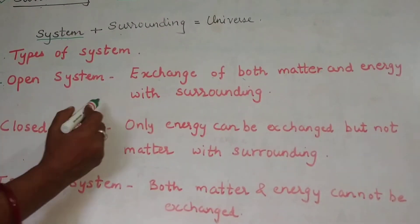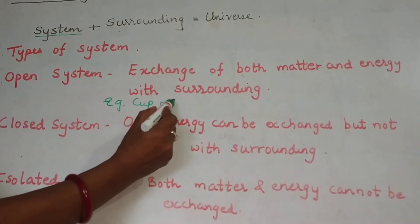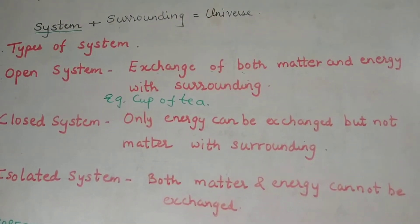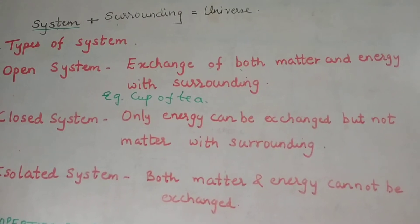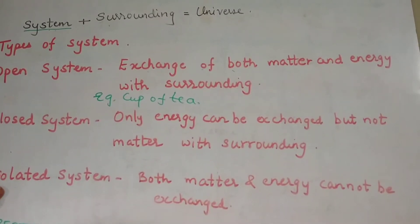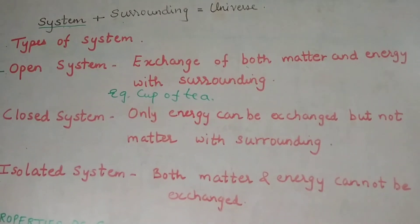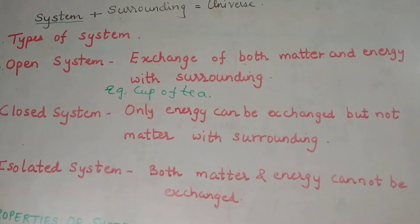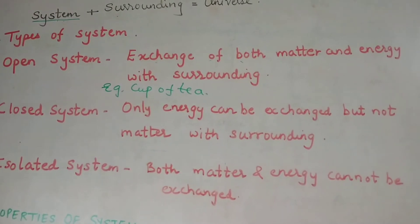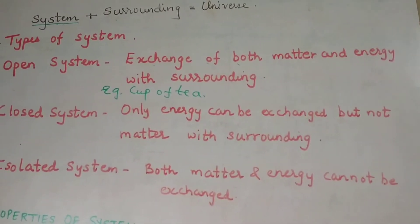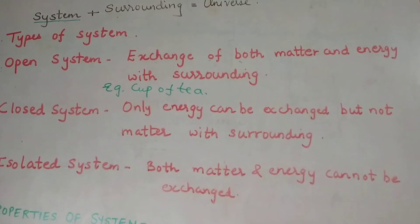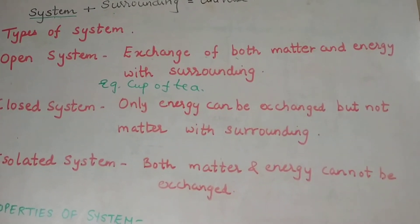For example, take a cup of tea which is kept on the table — this cup is open. There can be exchange of energy because the tea is going to become cool after some time, meaning heat is being exchanged with the surrounding. Matter can also be exchanged; you can add sugar into the tea because it is an open cup. So both energy and matter can be exchanged, making it an open system.